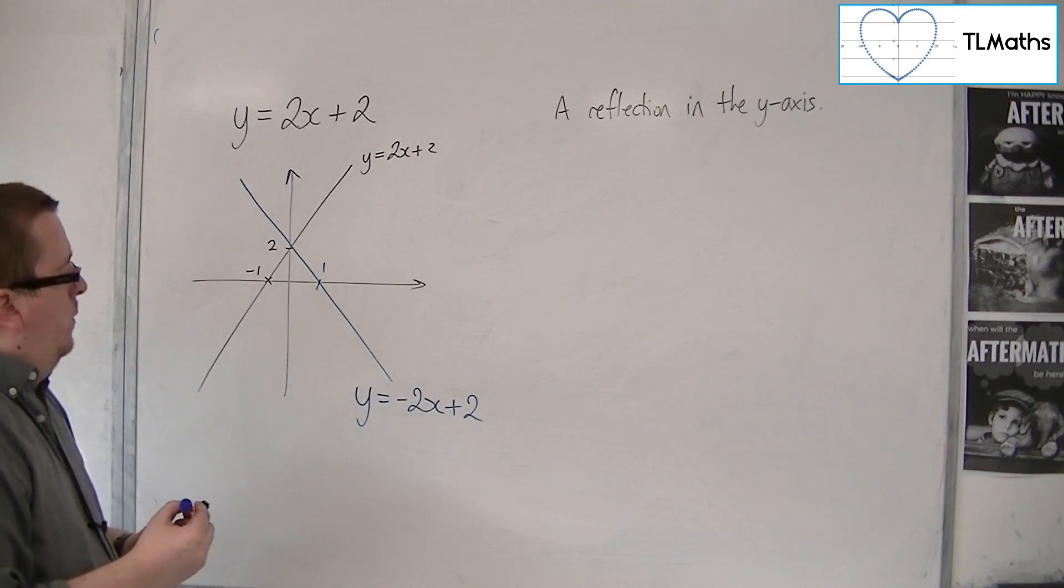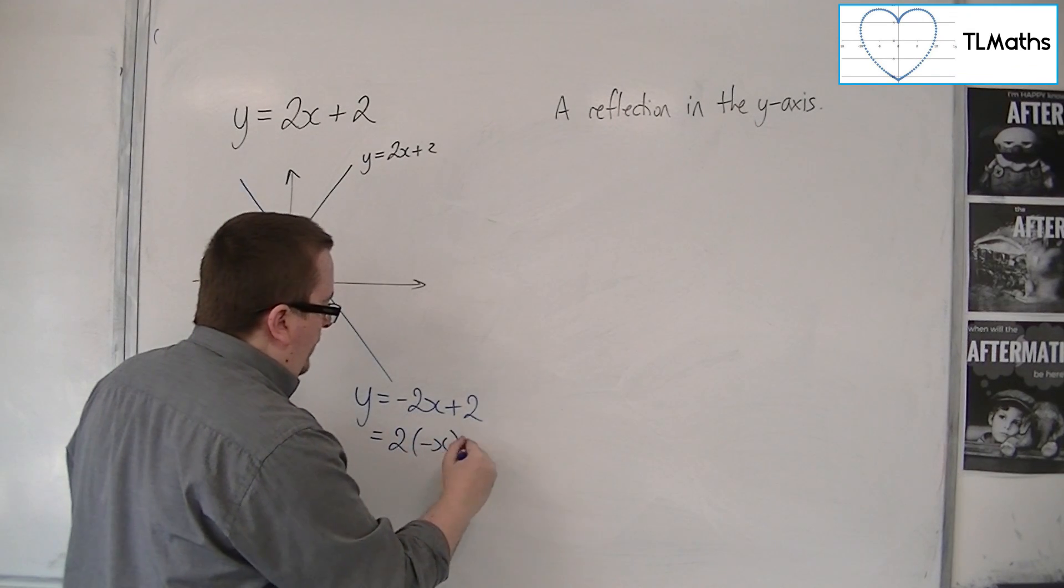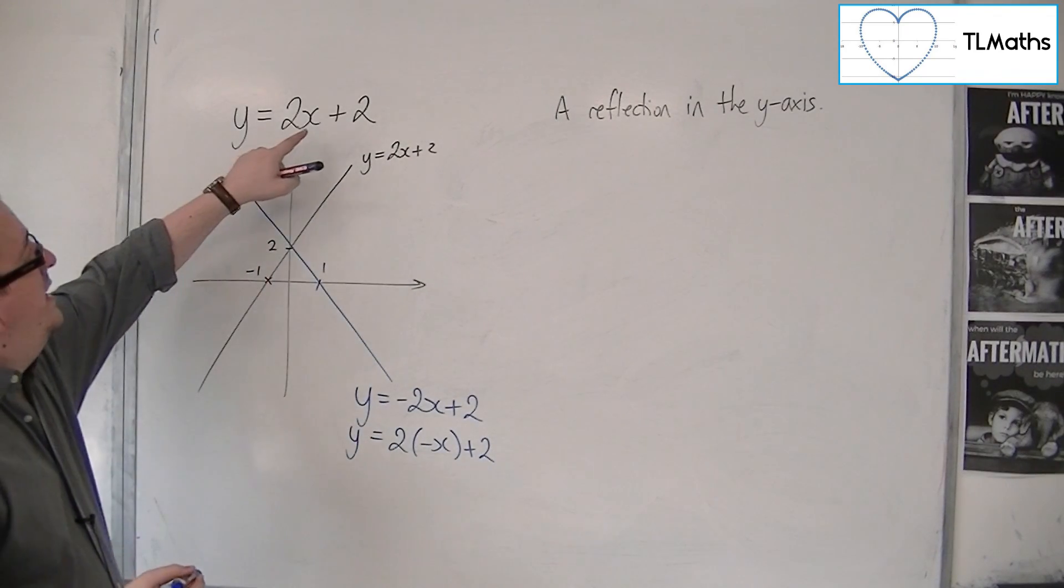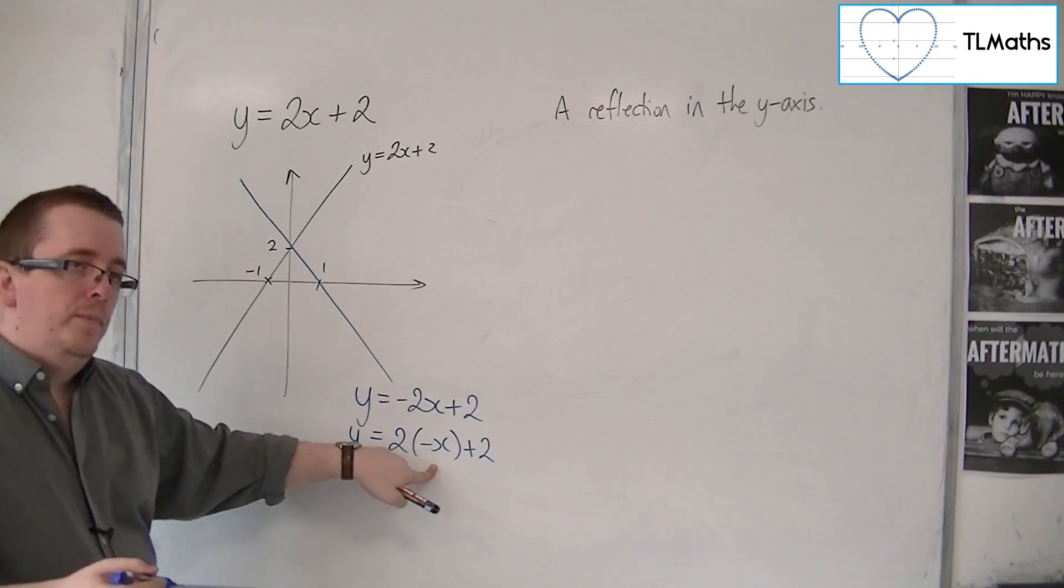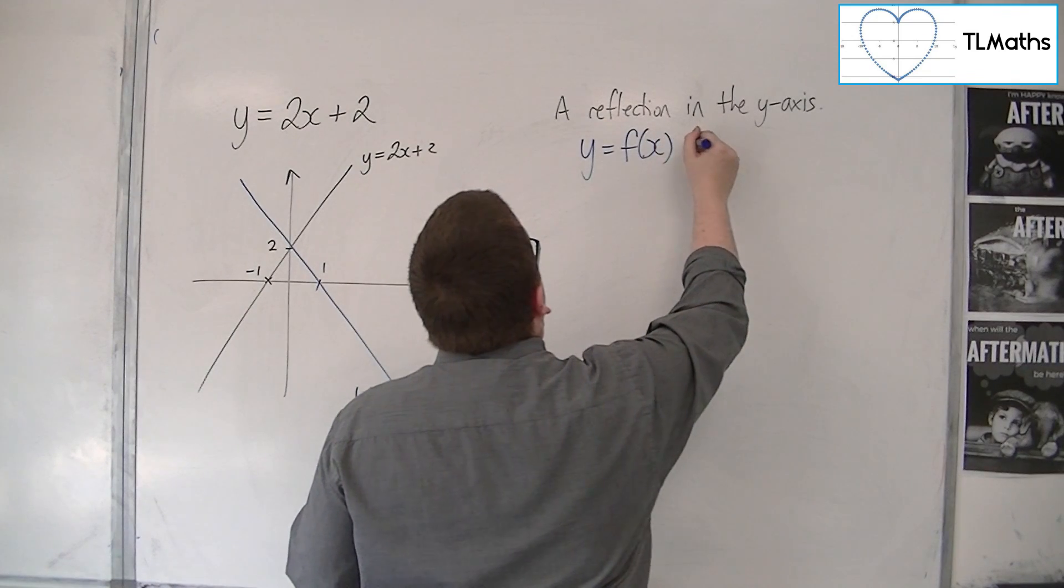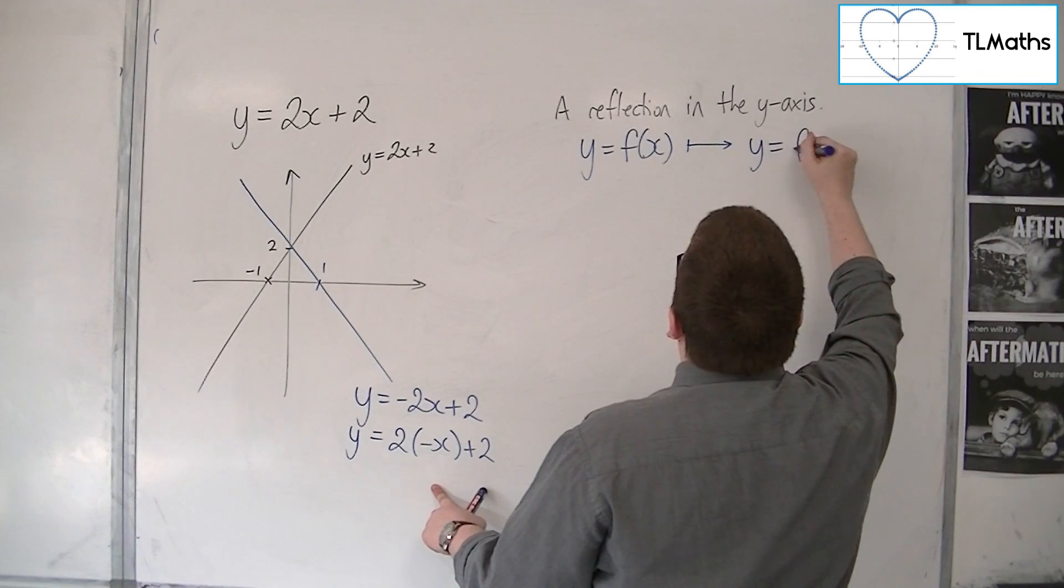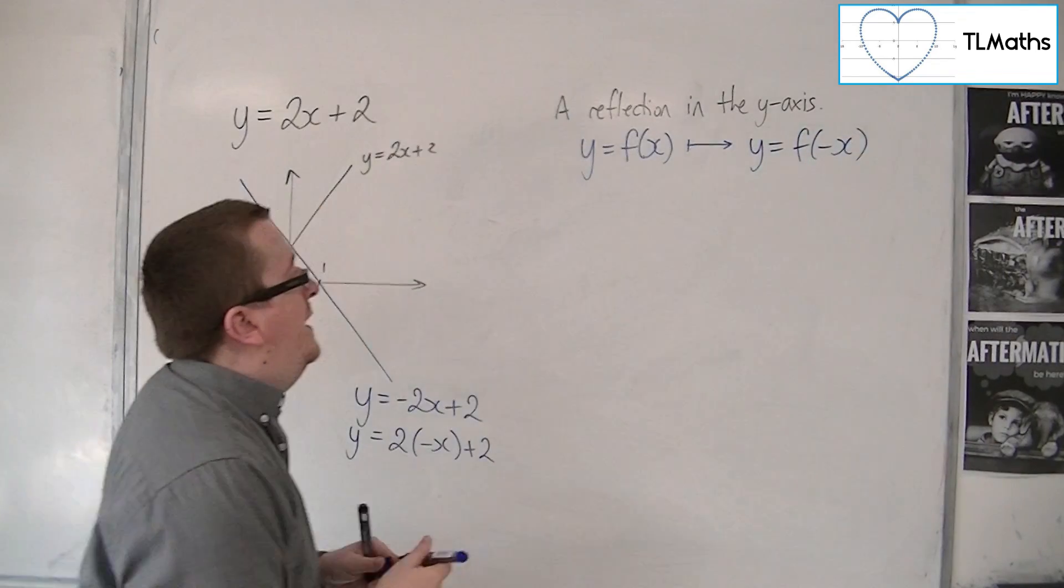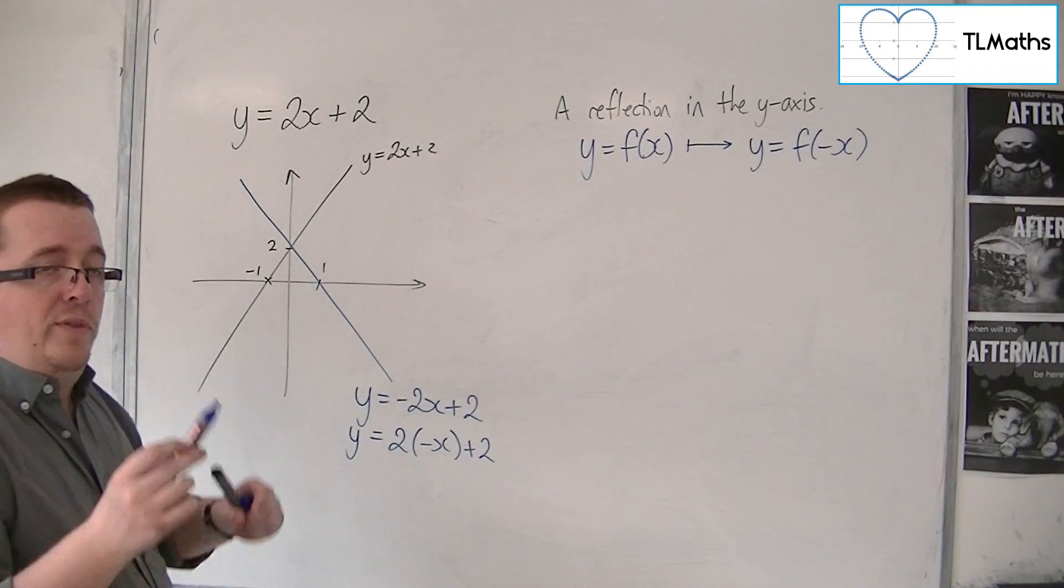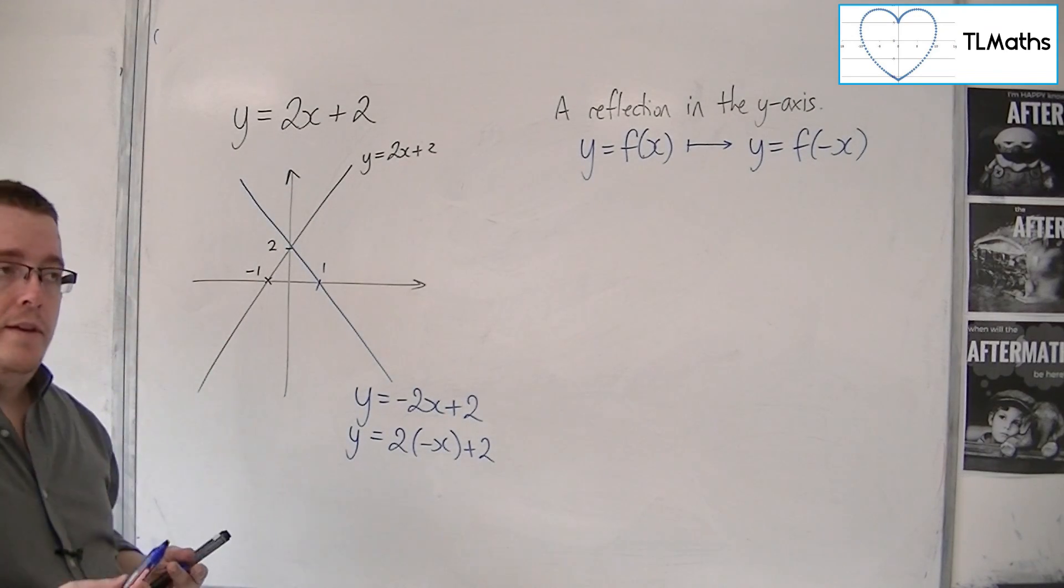OK, and this would have the equation y is equal to minus 2x plus 2. OK, so what I'm going to do is I'm going to rewrite this as 2 lots of minus x plus 2. Because that identifies what's happening here. How we're getting from that equation to that one. In general, we're starting off with y is equal to a function of x and we're getting y is equal to a function of minus x. Because effectively,